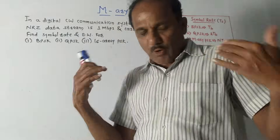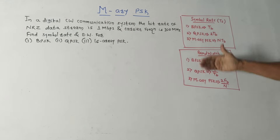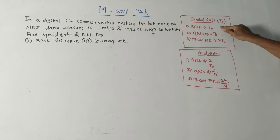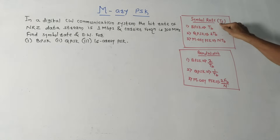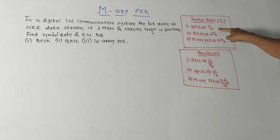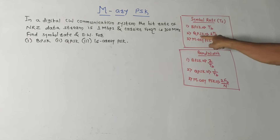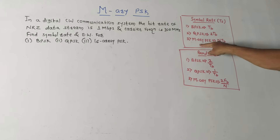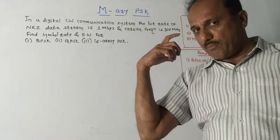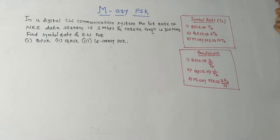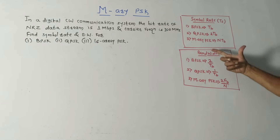Now let us discuss a numerical example. The formulas are straightforward — you just need to remember them. For symbol duration Ts: BPSK → Ts = Tb; QPSK → Ts = 2Tb; M-ary PSK → Ts = n × Tb, where n is the number of bits used to form a symbol. For bandwidth: BPSK → 2fb; QPSK → fb; M-ary PSK → 2fb/n.